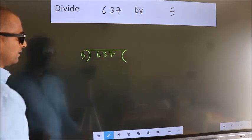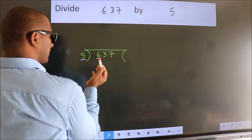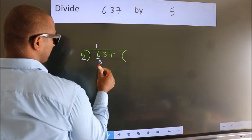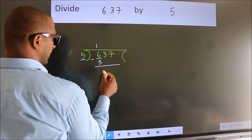Next, here we have 6, here 5. A number close to 6 in the 5 table is 5 once is 5. Now we should subtract. We get 1.